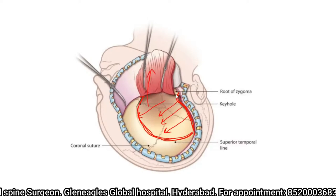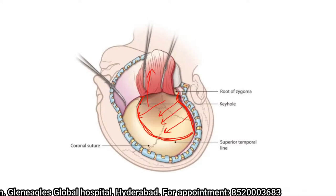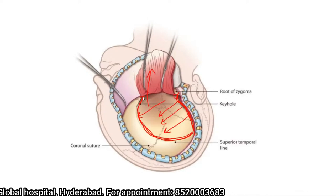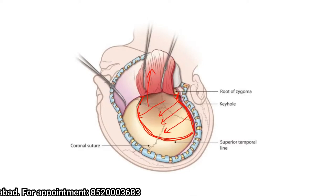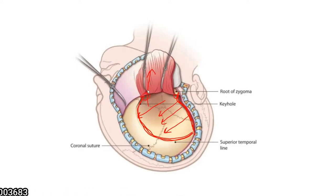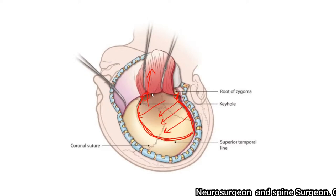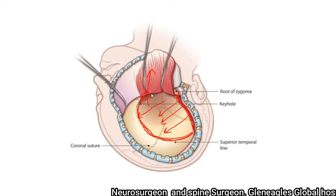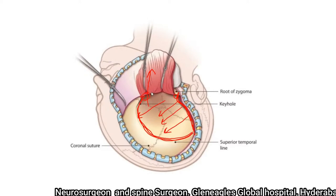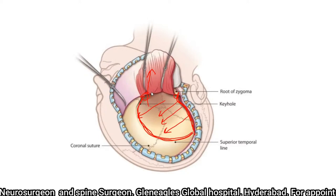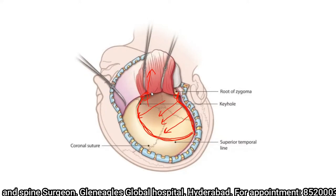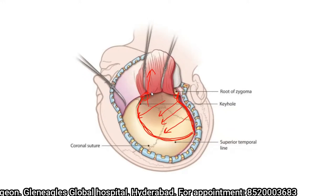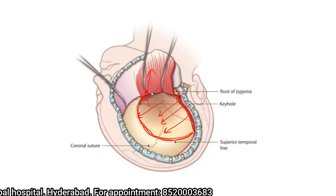Ensure that you are exposing the root of the zygoma and the anterior part of the root of the zygoma. The frontal process of the zygoma is where you place the key burr hole. Once you retract the temporalis muscle, you can hold it with tissue, or as preferred in our institute, take a stitch with 1-0 silk and retract it with rubber bands.